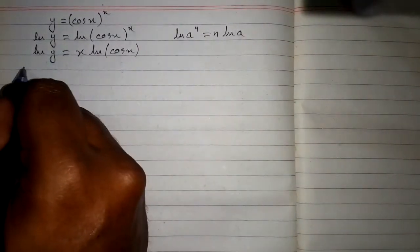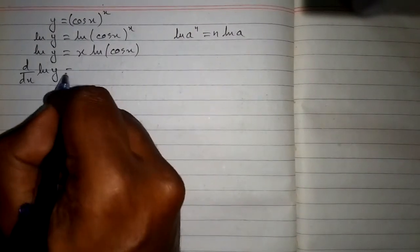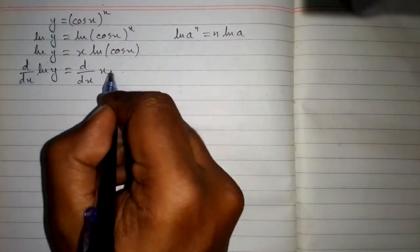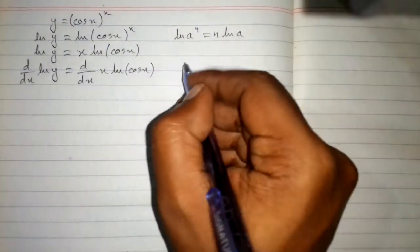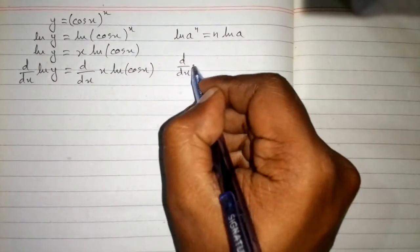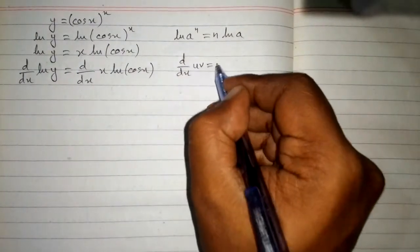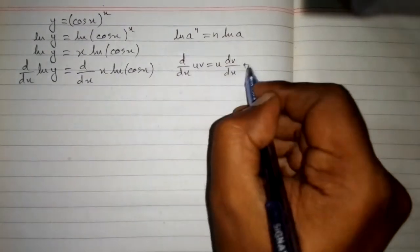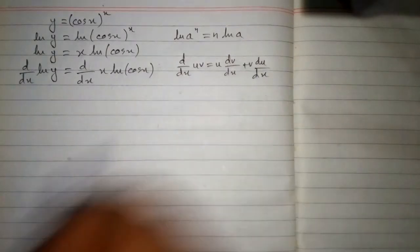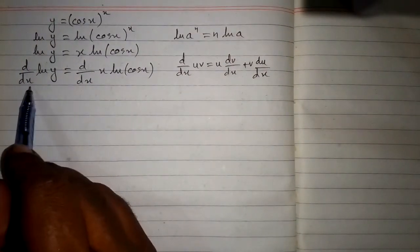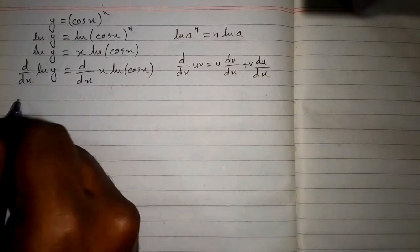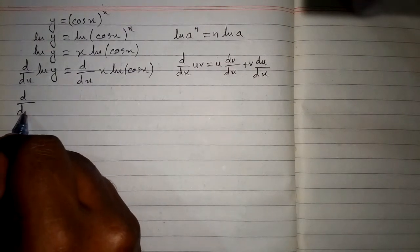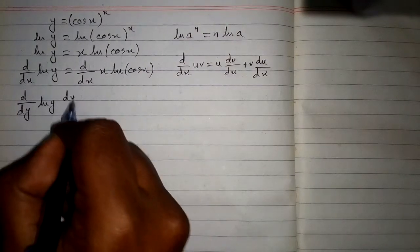Now we will apply the derivative on both sides. So we have d/dx of ln y is equal to d/dx of x times ln of cos x. In order to differentiate the right side, we will use the product rule: derivative of uv equals u times derivative of v plus v times derivative of u. On the left side, we will use the chain rule because we cannot differentiate ln y with respect to x directly, so we use d/dy of ln y times dy/dx.